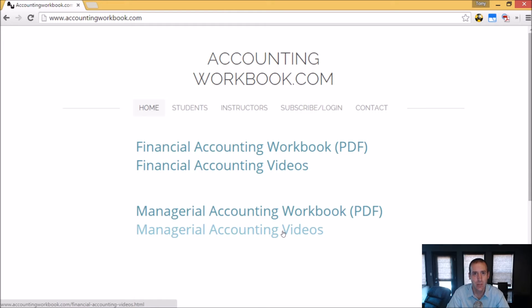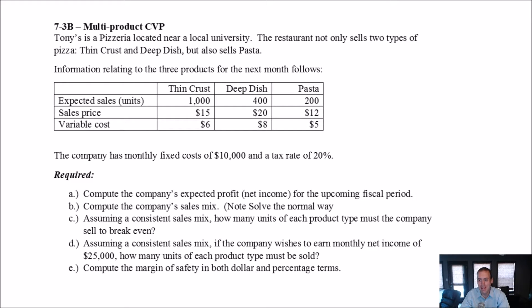Okay, let's get started with the problem. Let's have a look at problem 73B, another multi-product CVP problem. I'll try to move a little bit more quickly this time. Tony's is a pizzeria located near a local university. The restaurant not only sells two types of pizza, thin crust and deep dish, but also sells pasta. Information relating to the three products for the next month follows.